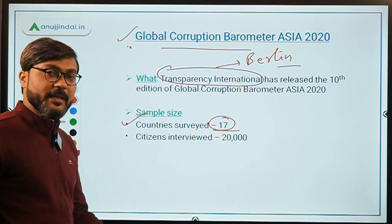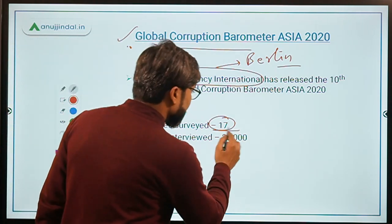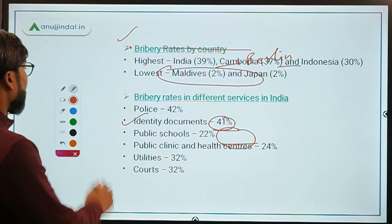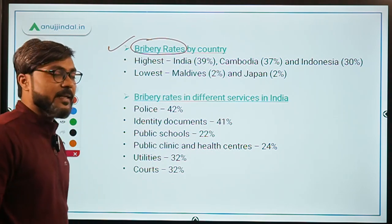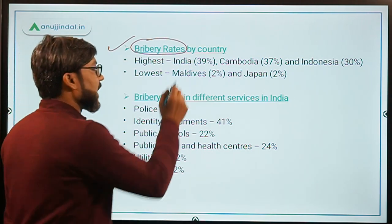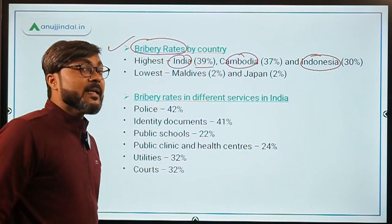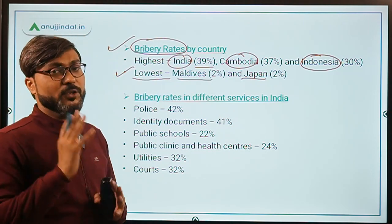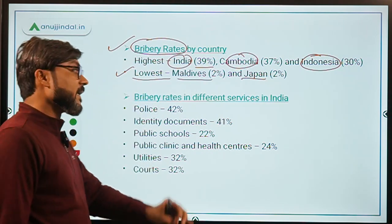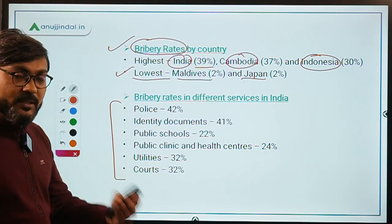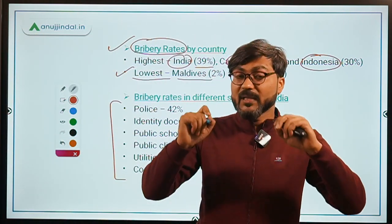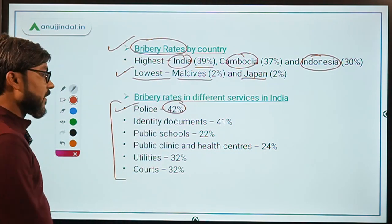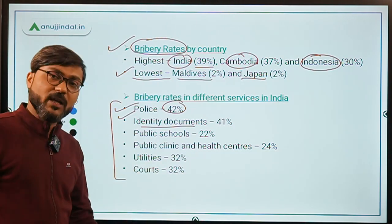Total countries surveyed are 17 and total persons interviewed during this report were 20,000. Regarding the highest bribery rates in Asia: the highest bribery rates are in India at 39%, followed by Cambodia and Indonesia - which means India is the most corrupt country among Asian nations. The lowest are Maldives and Japan with a bribery rate of only 2%.